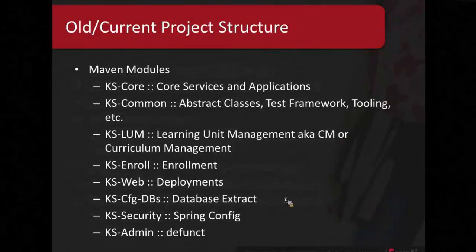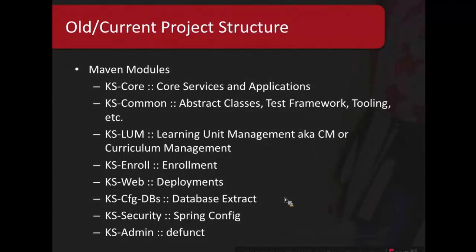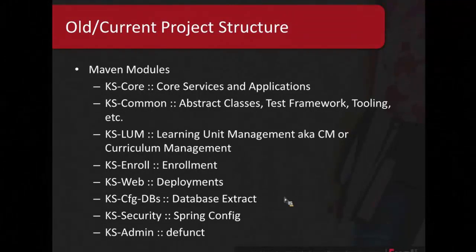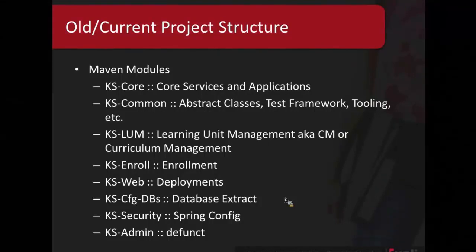One of the things we're in the process of changing is our project structure. When we first started, we decided to do Maven submodules. We have a Maven project with major modules like KS Core, KS Common, and others listed. Under each of those Maven modules there are submodules — for example, KS Core API, KS Core. So we have a lot of Maven modules that are hierarchical in nature.